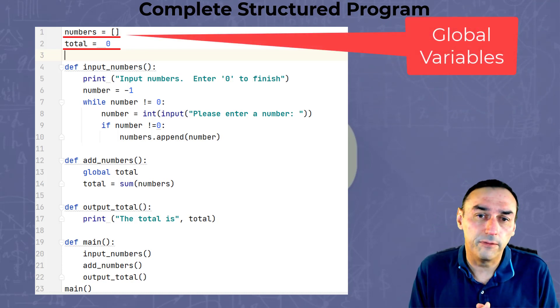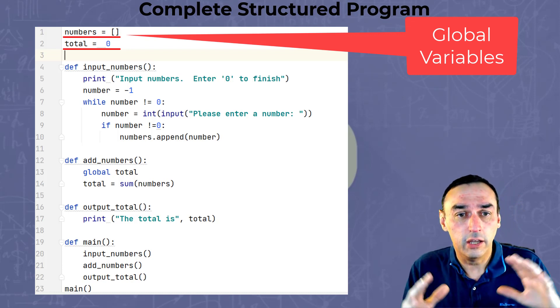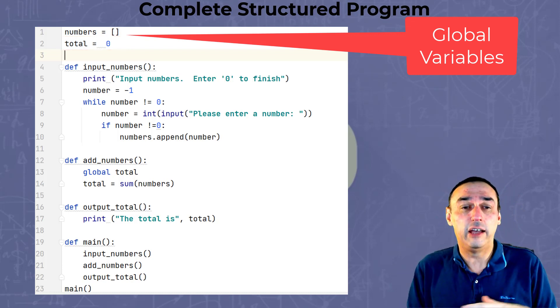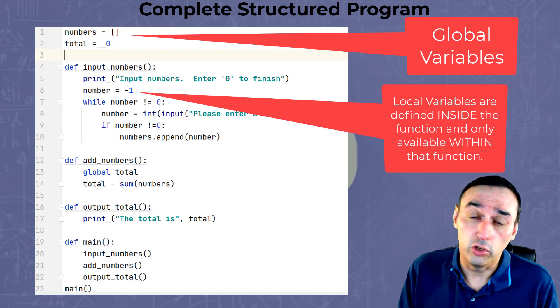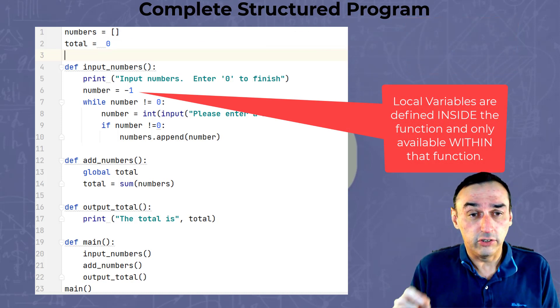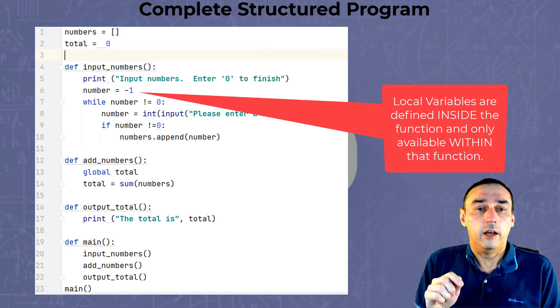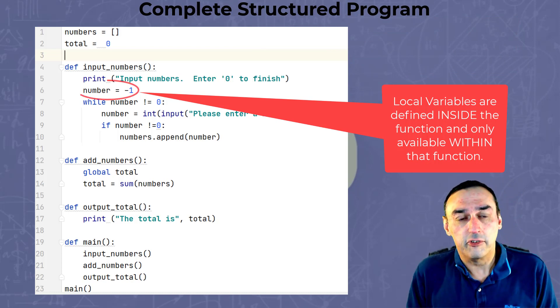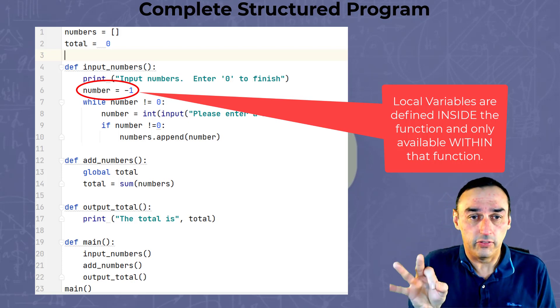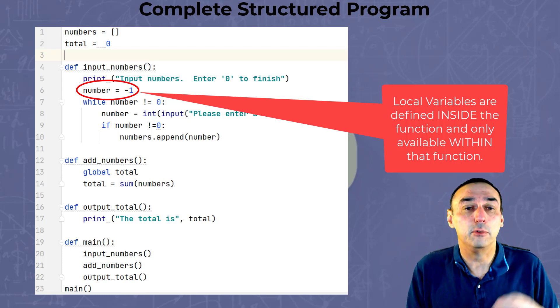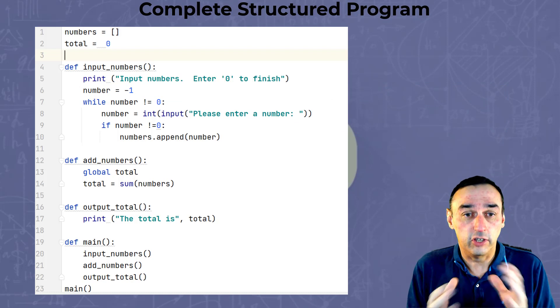What we mean by global variables are variables that are accessible throughout the entire program. Now opposite to that is what we call localized variables or local variables. And you can see that in this program, taking number as the example, that is a local variable. It is only accessible inside that function, and it won't be accessible outside of that function, just in that function.